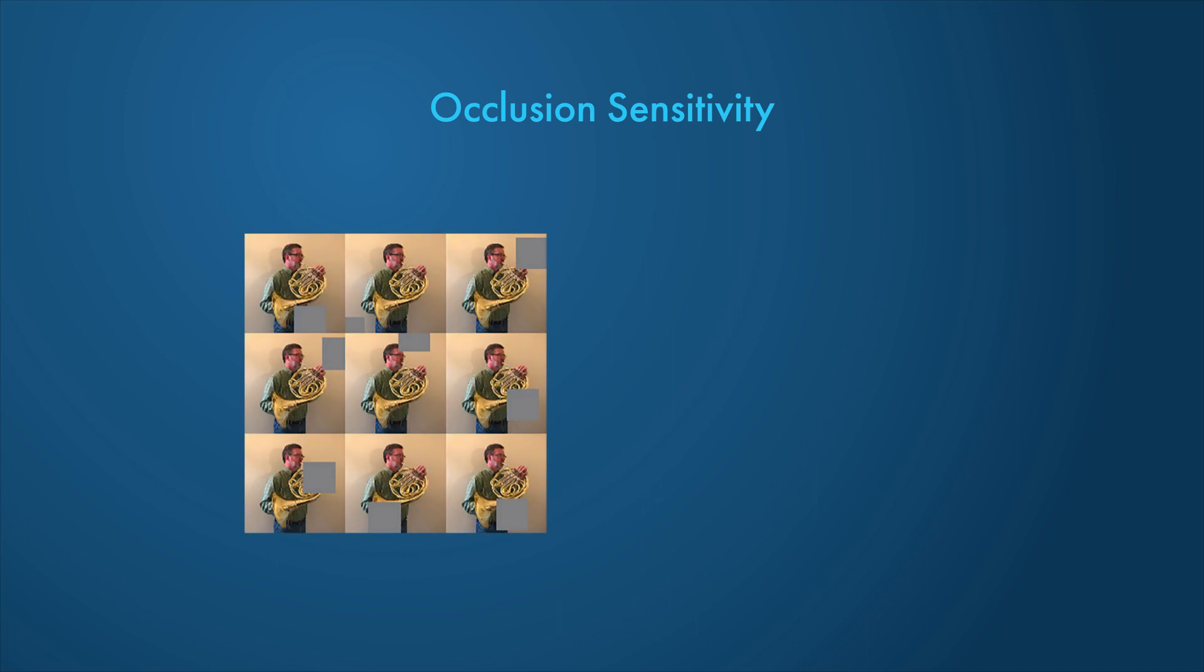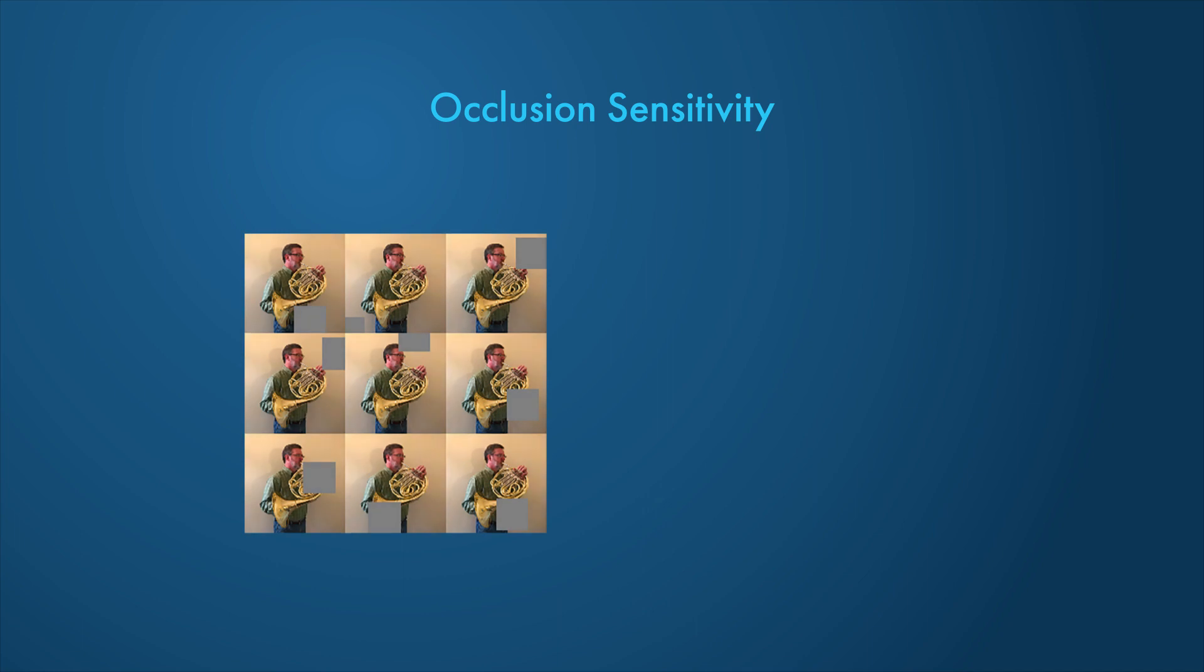Occlusion sensitivity is a simple technique. It computes a map of the change in activation when parts of the input are occluded with a mask. The occluding mask is moved across the input data, giving a change in classification score for each mask location.